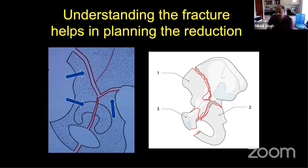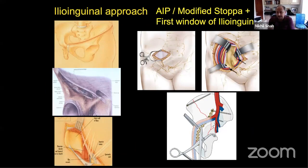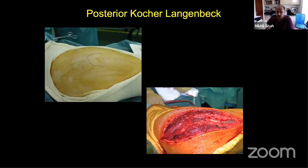Understanding the nature or personality of an associated both column fracture is very important. Only when we understand the fracture anatomy properly can we plan treatment and approaches. If the predominant displacement is anterior, you use anterior approaches — ilioinguinal, modified Stoppa, iliofemoral, or variations. If most of the work has to be done from the back, you use a Kocher-Langenbeck approach, and in many cases a dual approach is needed for accurate reduction.